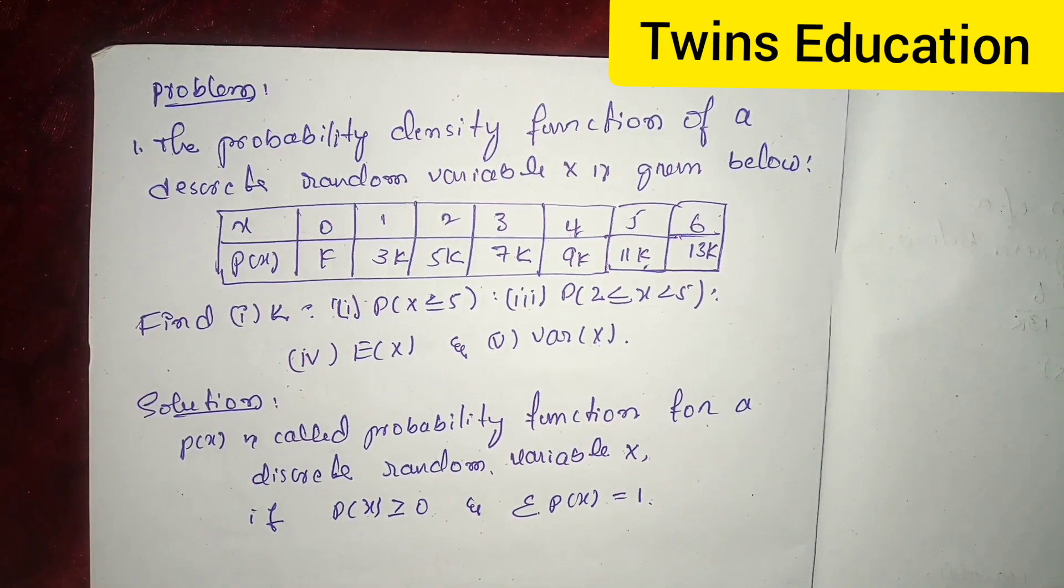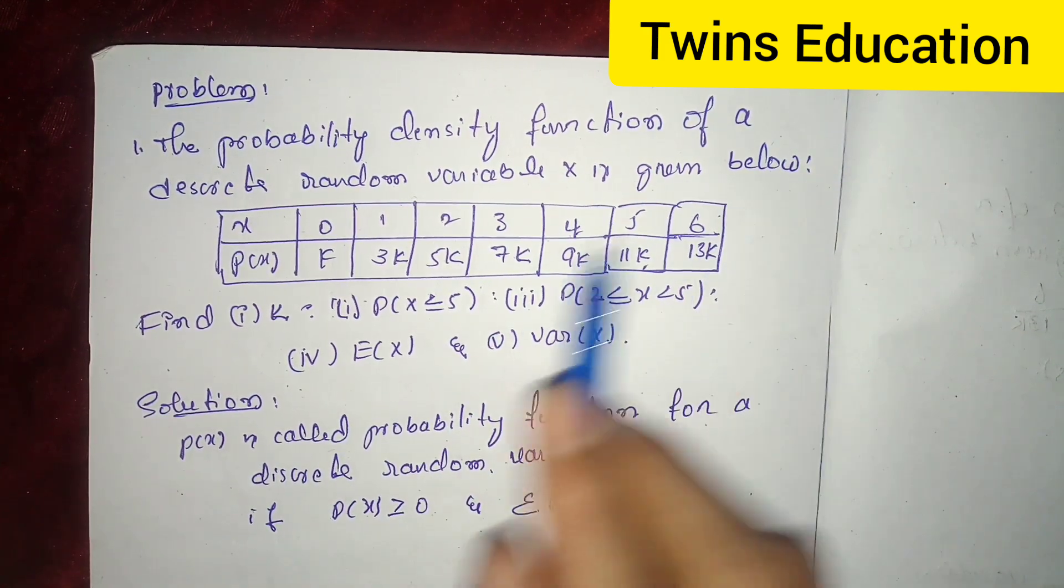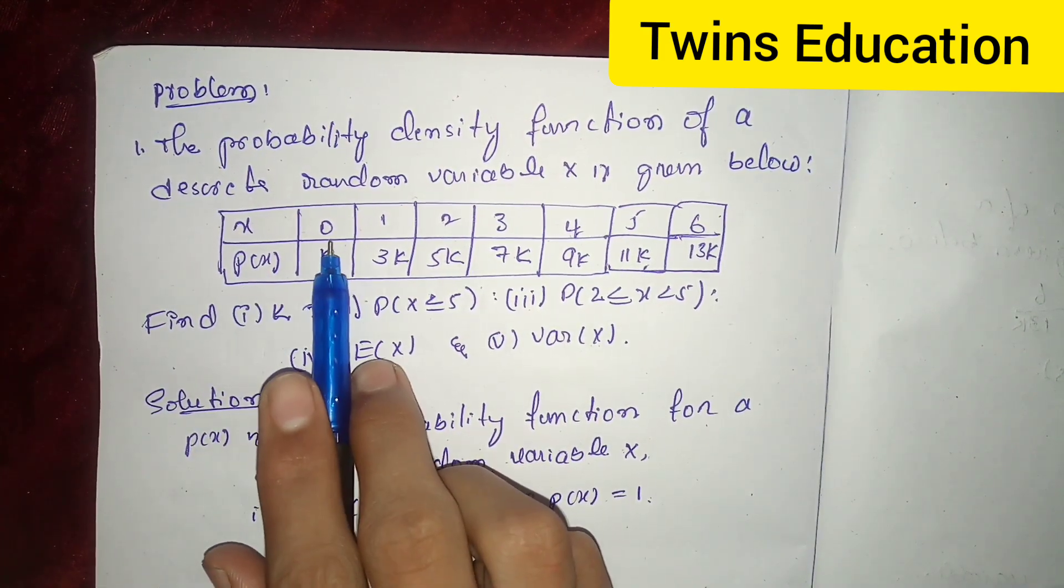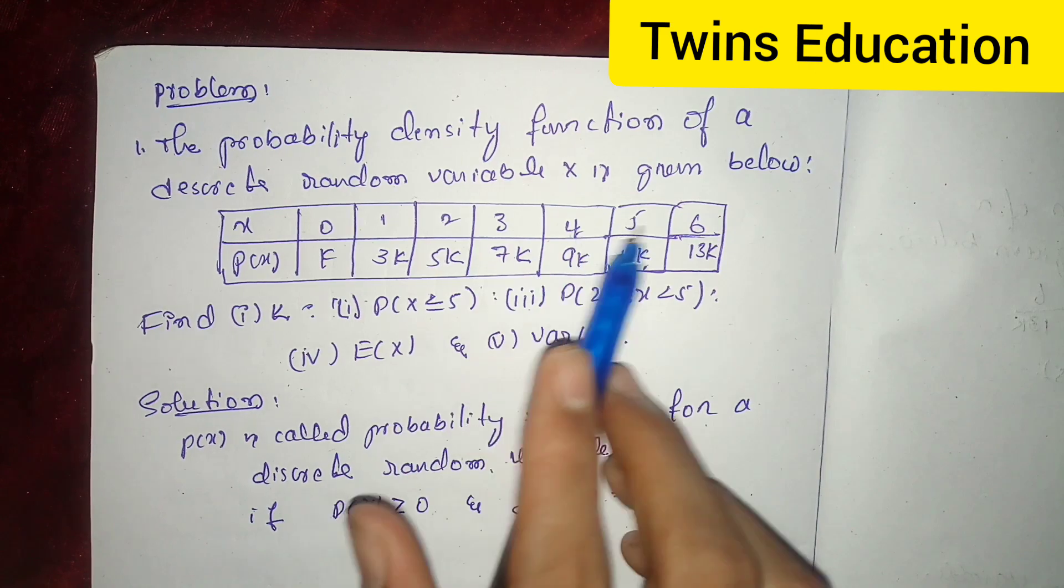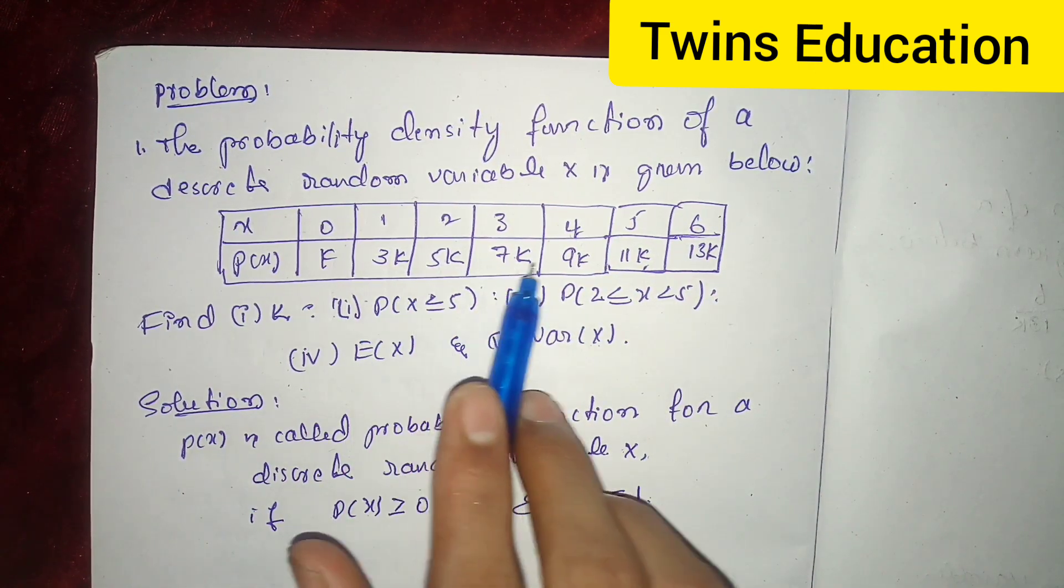Here, the probability density function of a discrete random variable x is given below. x values are 0, 1, 2, 3, 4, 5, 6 and p of x values are k, 3k, 5k, 7k, 9k, 11k, 13k.